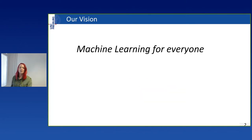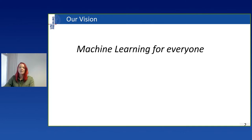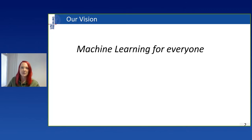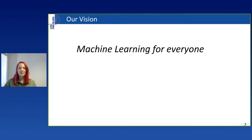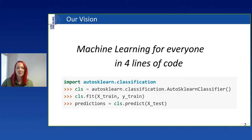So first of all, why are we doing this? Why do we need AutoML? Machine learning is a very important key technology being used in many applications already and will be used in many more. However, mastering the art of machine learning requires expertise and experience. AutoML democratizes machine learning and makes it available for everyone. Our vision is to do this in four lines of code.